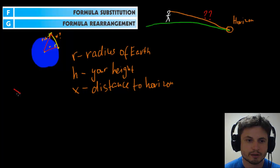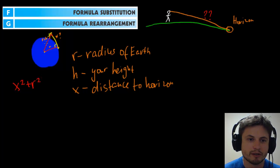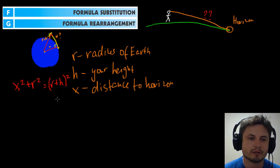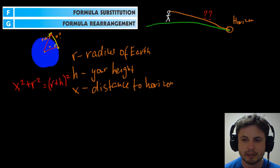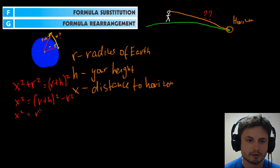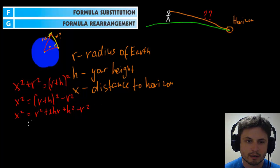According to the Pythagorean theorem, X squared plus R squared equals the hypotenuse squared, which in this case is R plus H, all squared. This is the actual formula for this. Now we just have to isolate the terms and find our X. We take R squared and put it on the other side, so X squared equals R plus H squared minus R squared. Let's distribute the brackets, and what you'll get is R squared plus 2HR plus H squared minus R squared.